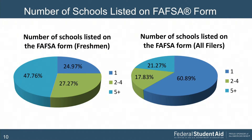Looking at the number of schools listed on the FAFSA form, the pie chart on the left focuses on freshmen and the right on returning students. About 75% of freshmen list more than one college, meaning they're using the tools offered, comparing options, and not limiting themselves. Conversely, only about 39% of returning students list more than one college, which makes sense — they're most likely attending the college they listed previously.